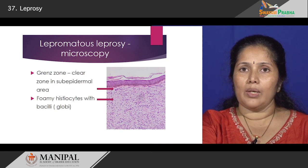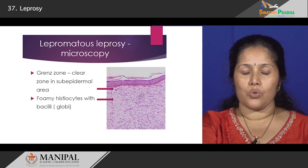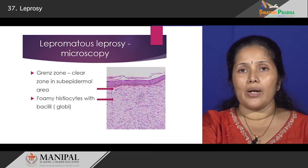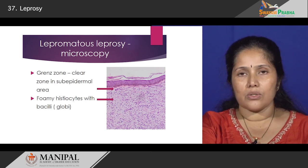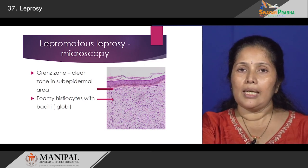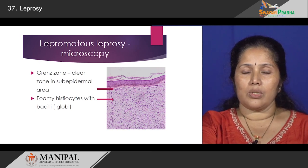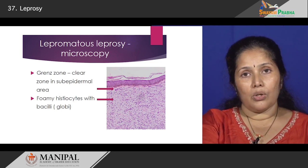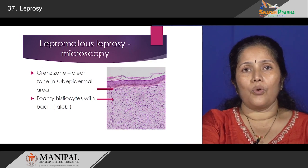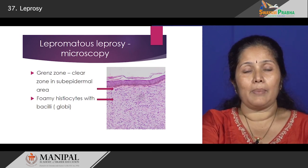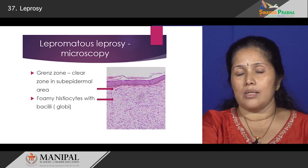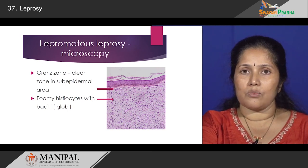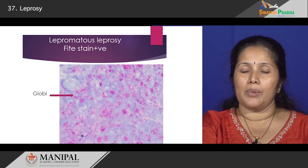What do you see in the microscopy? In the microscopy, as this picture is showing, we have what is known as a grenz zone. A grenz zone is a clear zone between the lesion in the dermis and the epidermis. Below the grenz zone you see a huge collection of foamy macrophages, and it is here that the bacilli proliferate in huge numbers. The entire dermis is filled with foamy macrophages where Mycobacterium leprae proliferates.